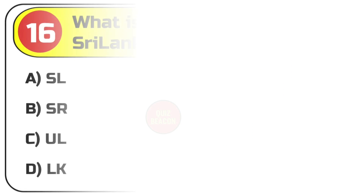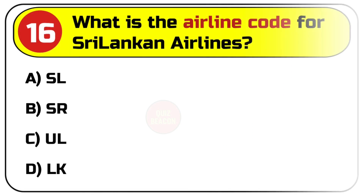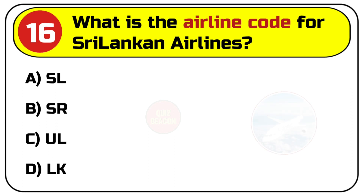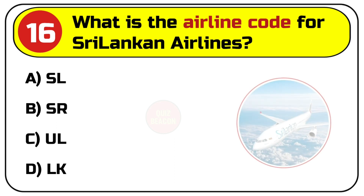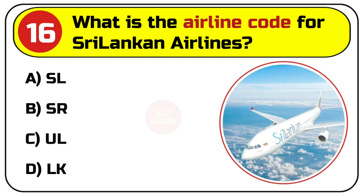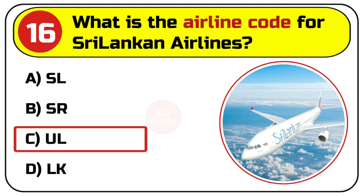Question number sixteen: what is the airline code for SriLankan Airlines? Options are A. ASL, B. SL, C. UL, D. LK. Correct answer is C. UL.